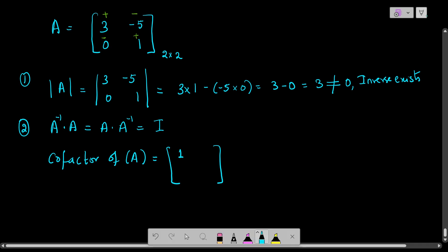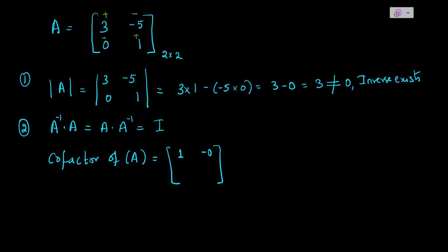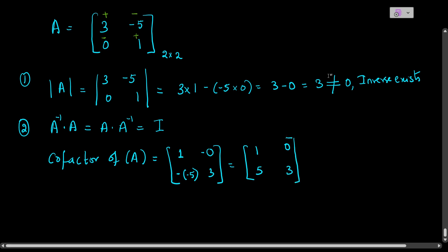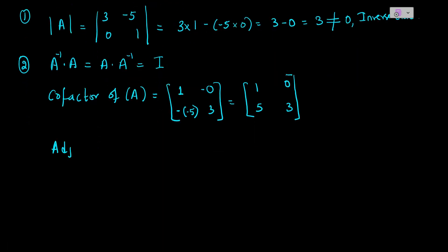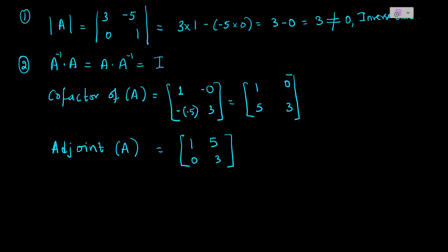For element 0, the place is negative, and the remaining element is −5, so that cofactor is −(−5) = 5. For element 1, the cofactor is 3. So the cofactor matrix is [1, 0; 5, 3]. The adjoint matrix is the transpose of the cofactor matrix, giving us adjoint(A) = [1, 5; 0, 3].